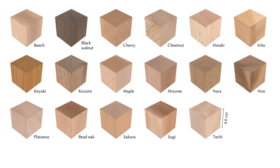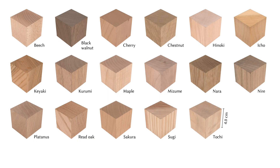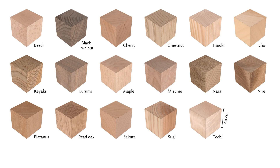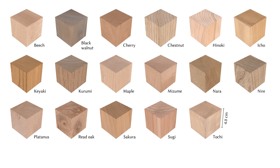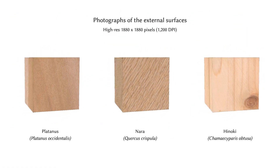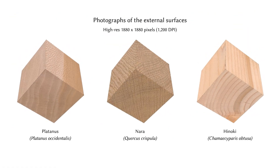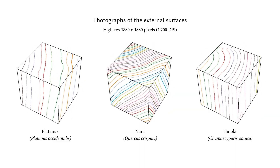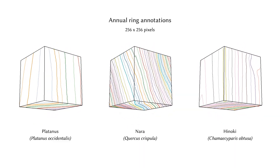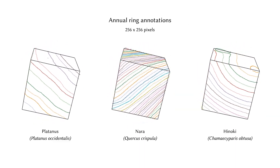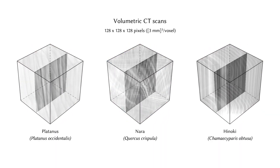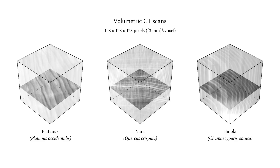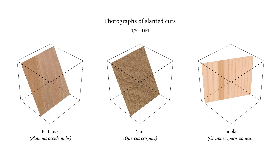Here we flip through instances of samples from each species, showing their diversity in terms of anatomical features, imperfections, and cut-out poses. The samples were documented by high-resolution photographs of their external faces, annual ring annotations of those photographs, and by photographs of two different types of slanted cuts through the cubes.